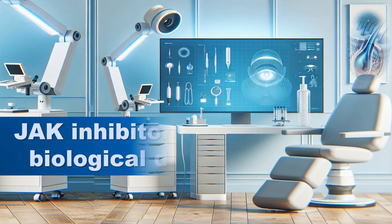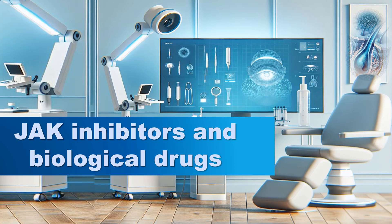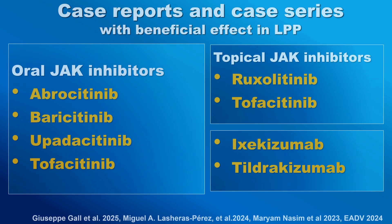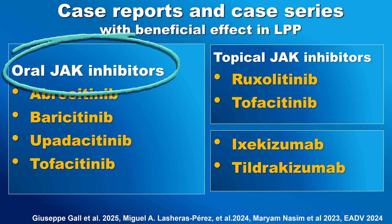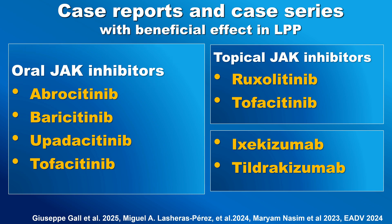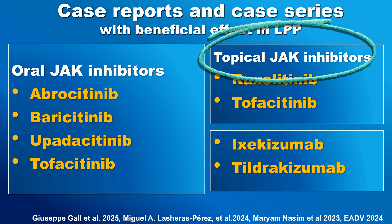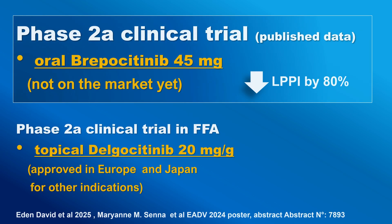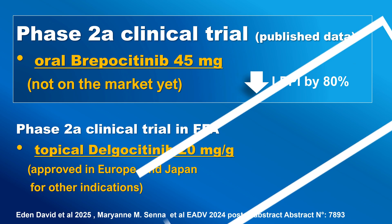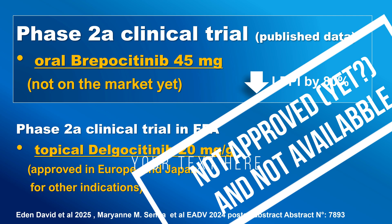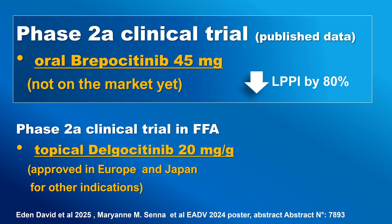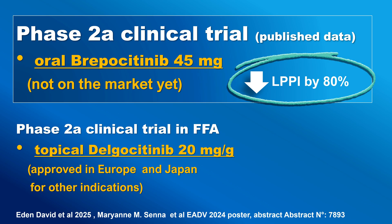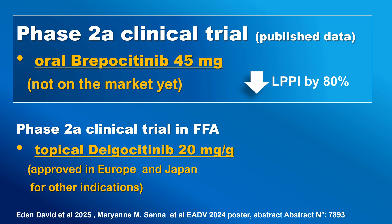Regarding more modern ways of treatment, we have mostly case reports covering almost all available oral JAK inhibitors in dermatology. There are also case reports and series on topical JAK inhibitors, and some studies on biologics like Ixekizumab and Tildrakizumab. There is one phase 2 clinical trial with Repozitinib — a drug not yet on the market — where the LPP-AI decreased by 80%. If confirmed in a phase 3 trial, this may become the first approved medication for lichen planopilaris.